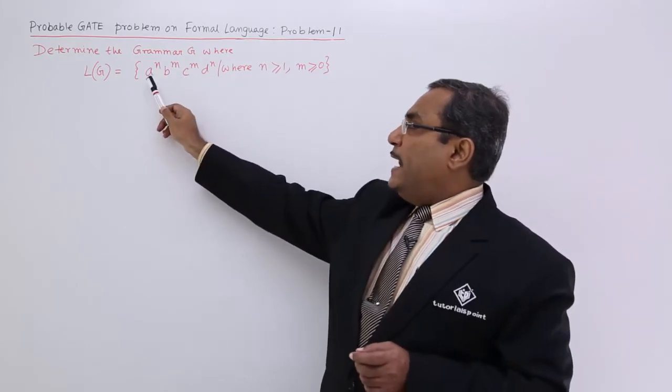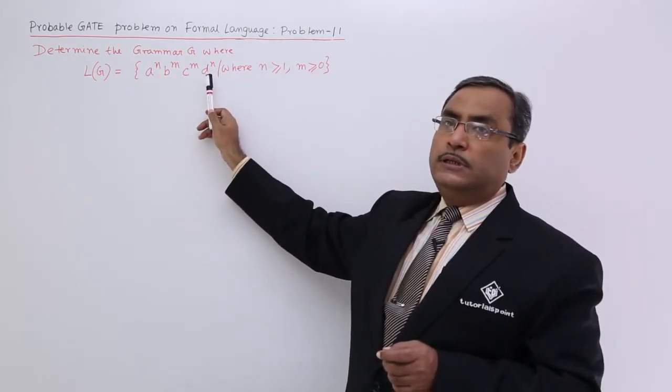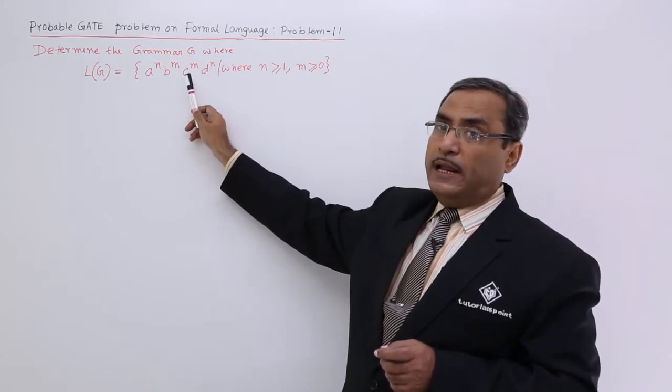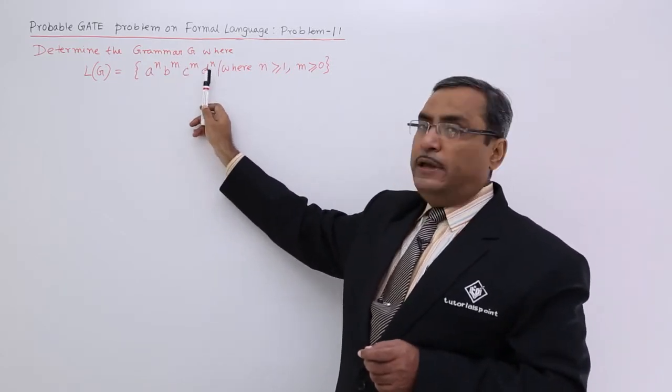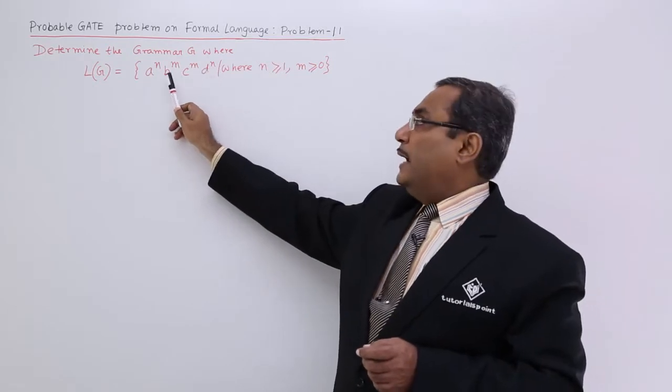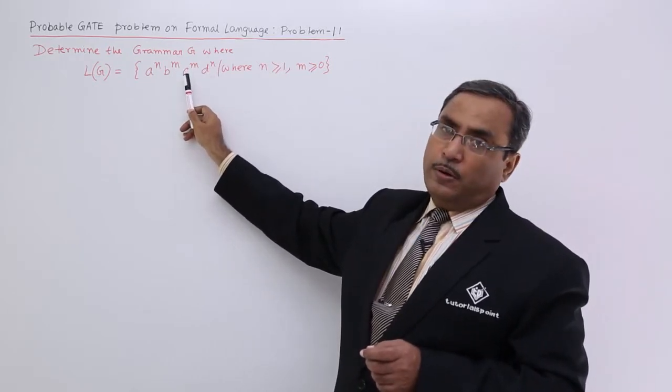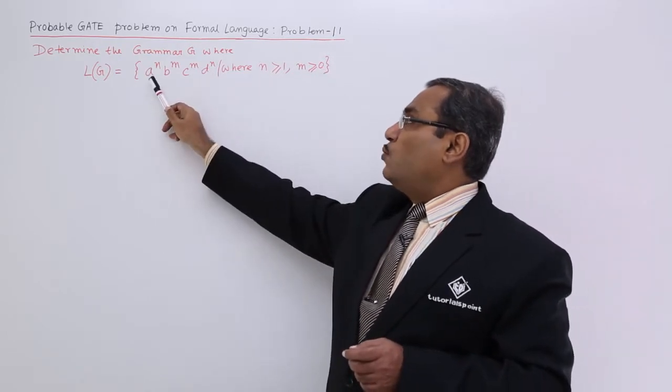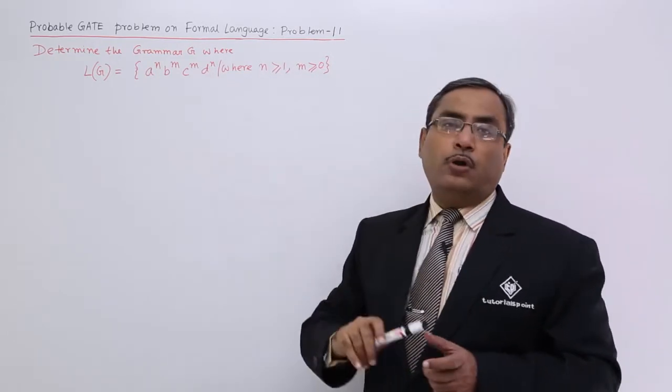That means a and d will be formed same number of times and b and c they will be coming same number of times. a and d will be coming for same number of times and b and c will be coming for same number of times. b and c may not come, but at least one a and at least one d should come always.